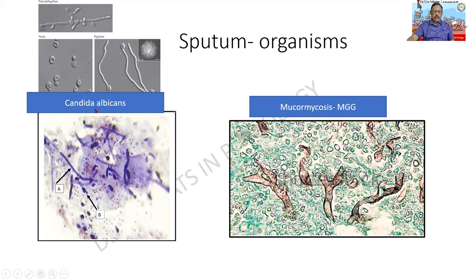Candida albicans is also a fungus which has got a figure-of-eight appearance or it divides by budding. But when it is in a very congenial atmosphere, it can grow into long hyphae-like structures which are called pseudohyphae.